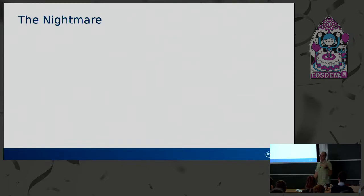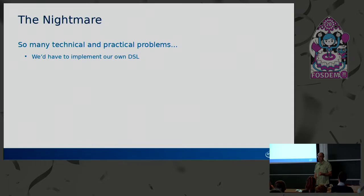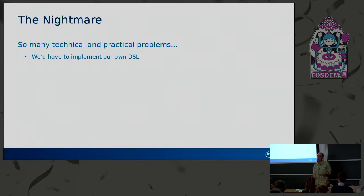Once we started digging into this years ago, the dream quickly turned into a nightmare. There were so many both practical and technical problems. The first big problem was we'd have to implement our own domain-specific language for the code generator generator — in order to implement our compiler, we had to implement another compiler. That was a huge problem in Mesa because until very recently, we didn't have a way to build something during the Mesa build that would run on your build system to generate other build dependencies, just because of the disaster that was Mesa's build system. It took almost 12 years before we could have even done this.